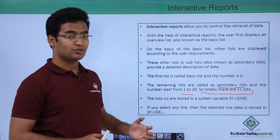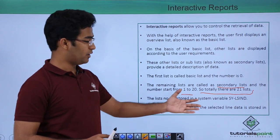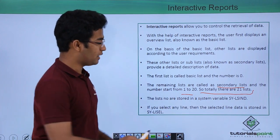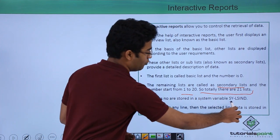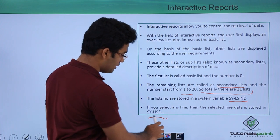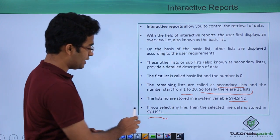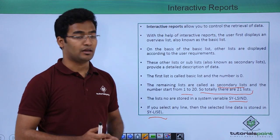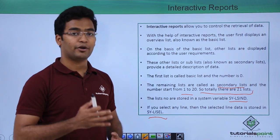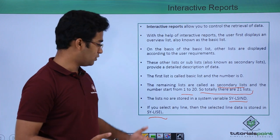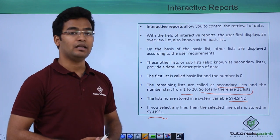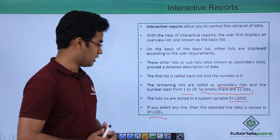The list numbers are stored in a system variable known as SYLSIND. Moreover, there is another system variable SYLISCL, and the data stored in that particular line is stored into the SYLISCL system variable.